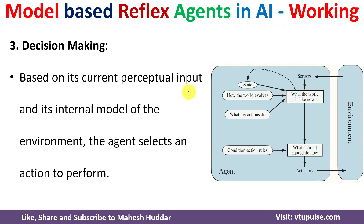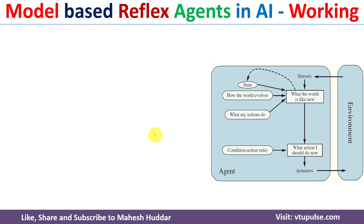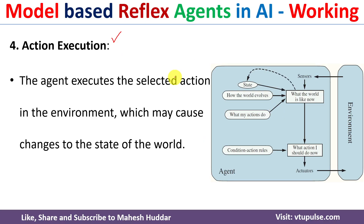The third step is decision making. Based on the current perceptual input received from the sensors and the internal model stored in the previous step, the agent selects an action which can be executed on the environment.